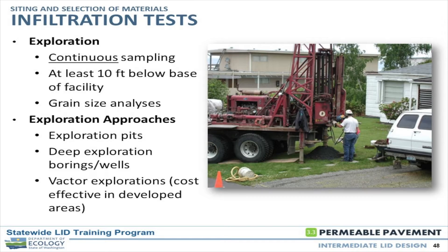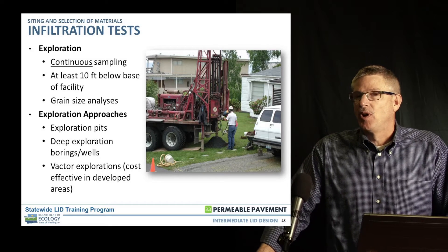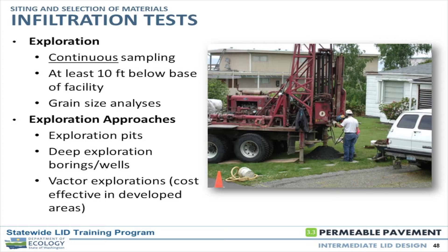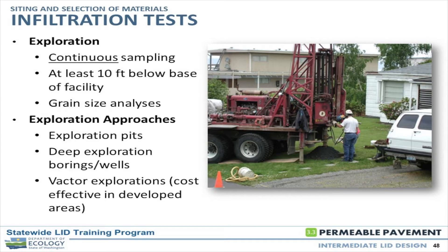For exploration, three basic ways we like to use: exploration pits — fairly economical, we can do a lot in one day, we're able to grab samples easily and see firsthand what's in the pit, including those stringers of silt that might inhibit flow. Exploration pits are really one of the more popular ways to go. Vactor explorations are a really good tool when doing upgrades in a city environment — median strips, planting strips where we've got utilities to deal with. Vactor pits work really well so we don't have to worry about hitting utilities, and we can take a hand auger back down a couple of feet to grab samples.